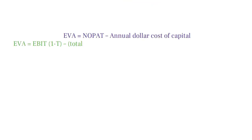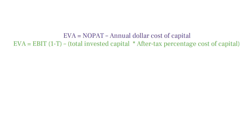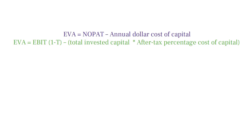Here's the formula for EVA: EVA equals EBIT times 1 minus t, minus total invested capital times after-tax percentage cost of capital.